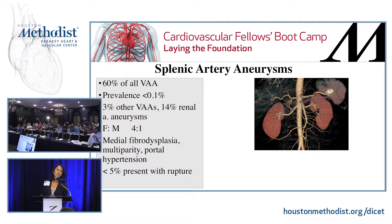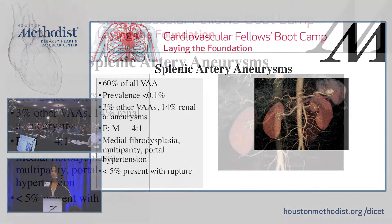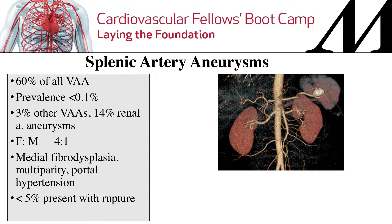Let's talk about the most common type of visceral artery aneurysm: splenic artery aneurysm, 60% of all of them. Prevalence is low, less than 1%. Some of these may have associated other visceral artery aneurysms, and about 14% have associated renal artery aneurysm. In this particular type, it's more common in women than men. The underlying etiology is thought to be medial fibrodysplasia, and it's thought that carrying many pregnancies puts you at higher risk. People with portal hypertension are also at higher risk of developing splenic artery aneurysm.